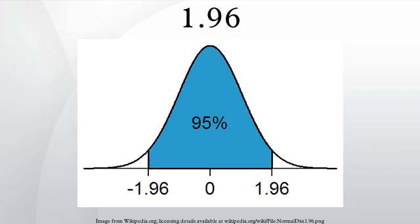1.96 is the approximate value of the 97.5 percentile point of the normal distribution used in probability and statistics. 95% of the area under a normal curve lies within roughly 1.96 standard deviations of the mean, and due to the central limit theorem, this number is therefore used in the construction of approximate 95% confidence intervals.